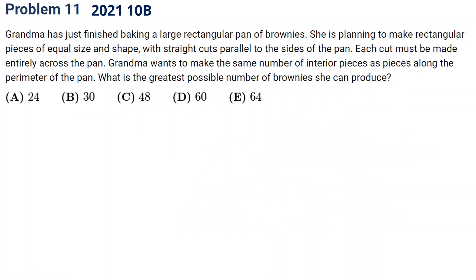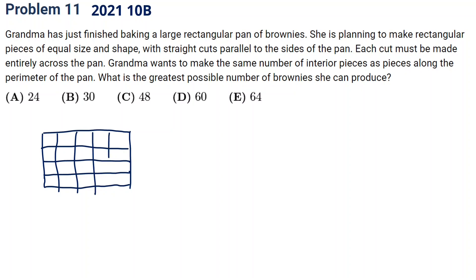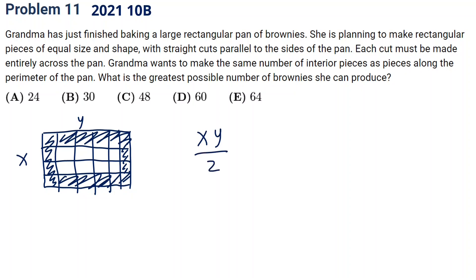The next one comes from 2021 10B problem 11. The question is about grandma making a rectangular piece and doing some cutting. The external side equals the internal area. Let's assume the rectangle is x by y, so x times y is the total area, divided by 2 is the interior part. The interior part is (x minus 2) times (y minus 2).